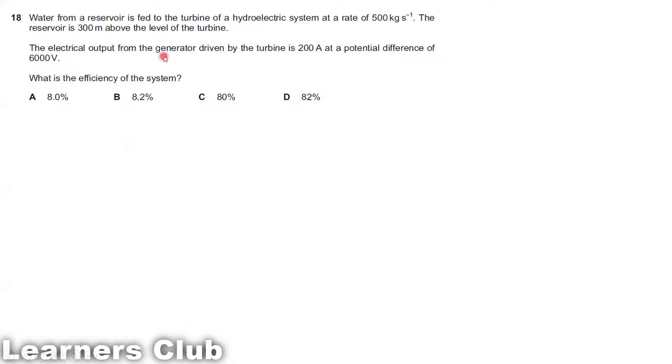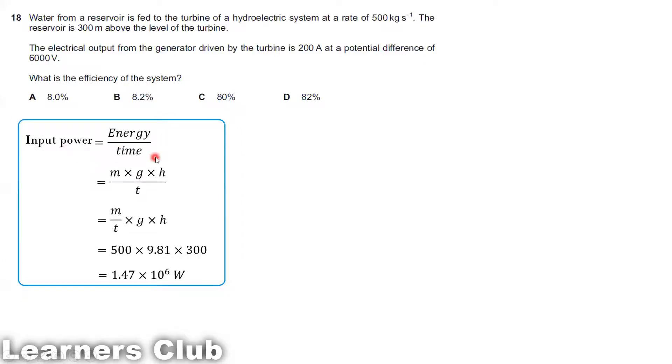To find the efficiency, since it's given per second we can consider power. Efficiency equals power output divided by power input times 100%. Power is equal to energy over time. Here the energy is the potential energy because our reservoir is kept 300 meters above the level of the turbine. So mgh over t. m over t is already given as 500 kg per second. So 500 into 9.81 into the height above the level of turbine, that is 300 meters. The input power is 1.47 times 10 to the power 6 watts.